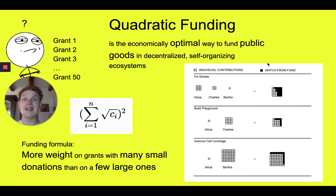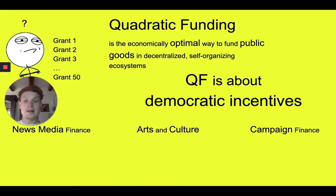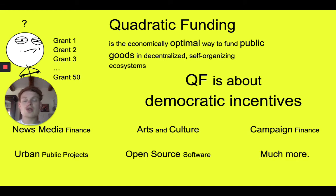So essentially, what we've done is create a way that's economically optimal to fund public goods in a decentralized, self-organizing ecosystem — and that's really exciting. Quadratic funding is about democratic incentives in a nutshell. A couple of examples, just to name a few: news media, arts and culture, campaign finances, urban public projects, open source software, and much more. There are so many incredible areas where quadratic funding can be used. And one of the awesome places it's already being used is Gitcoin — you can see they use quadratic funding to help fund a number of awesome projects in the Ethereum ecosystem.